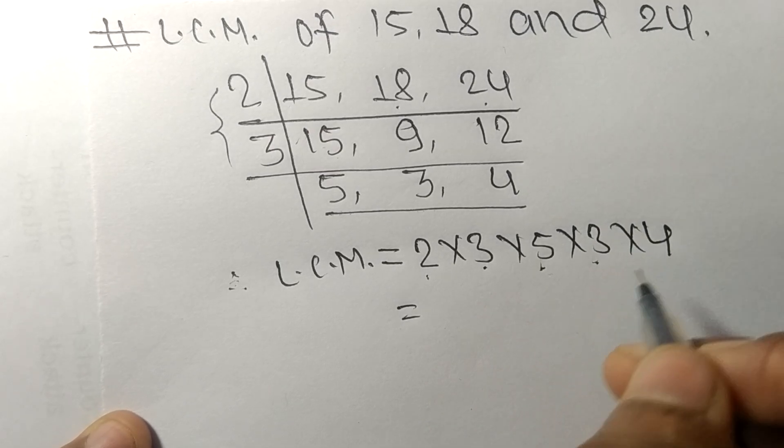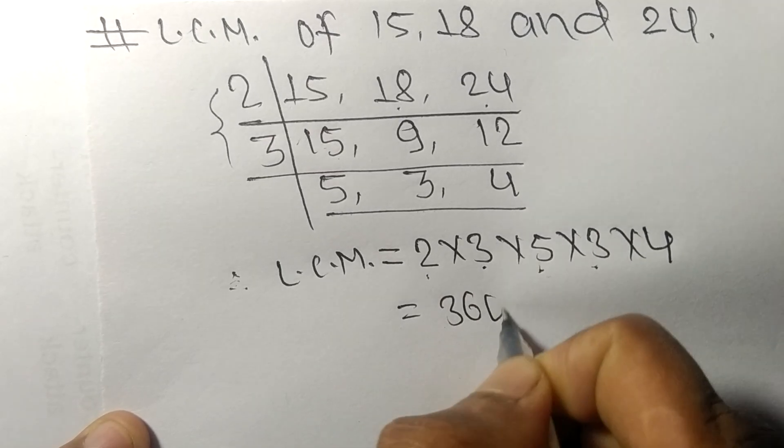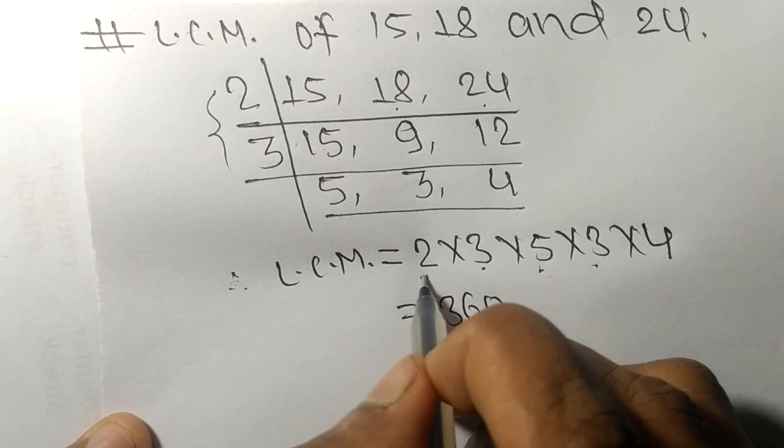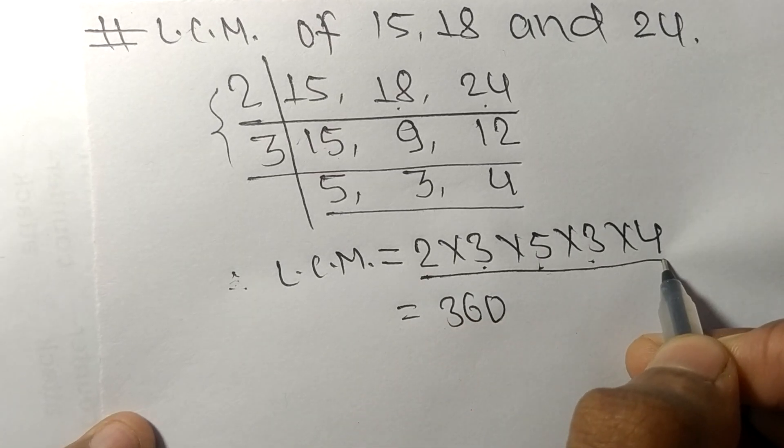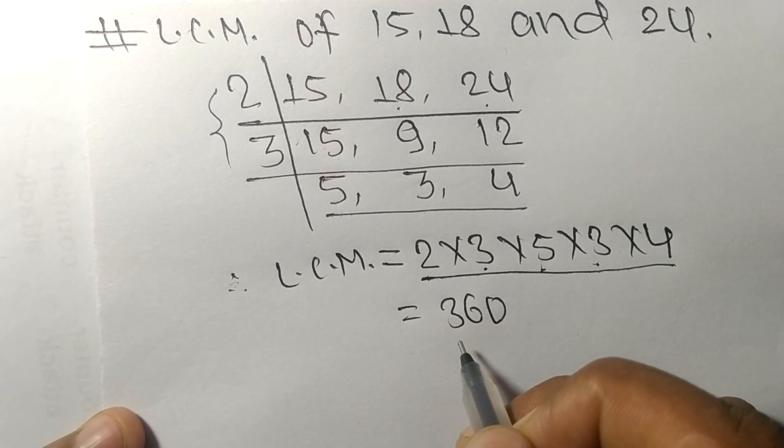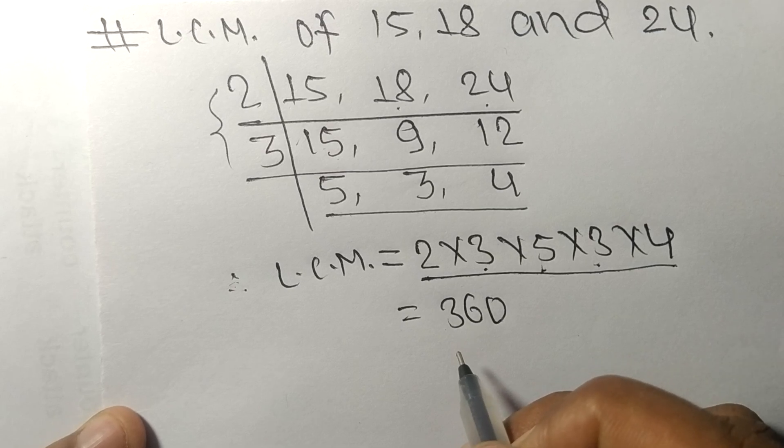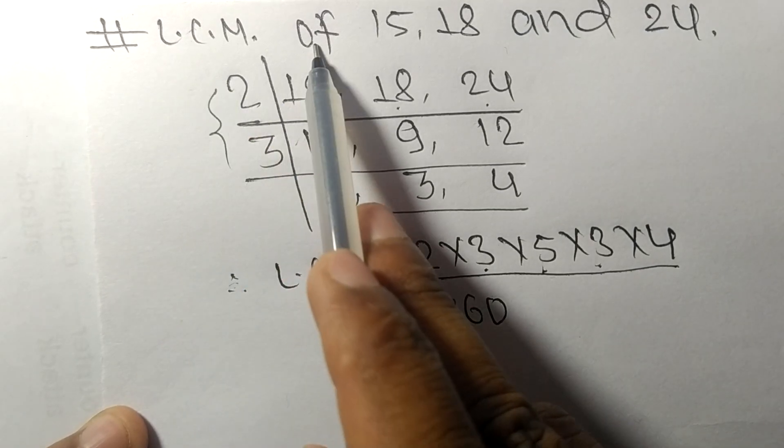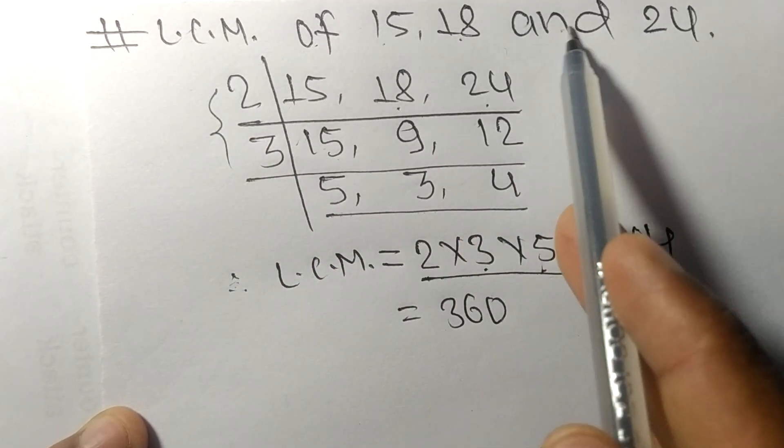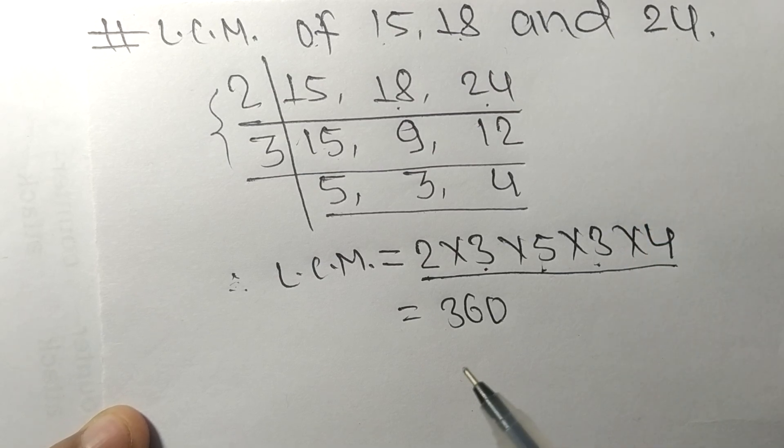90 times 4 means 360. So by multiplying all these numbers we got 360. So 360 is the LCM of 15, 18, and 24. So this is much for today and thanks for watching.